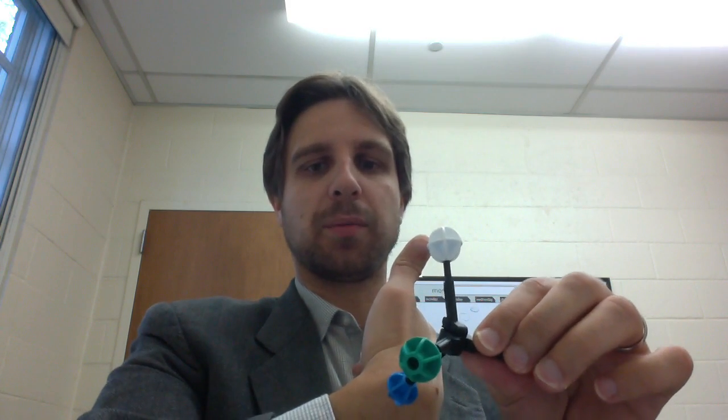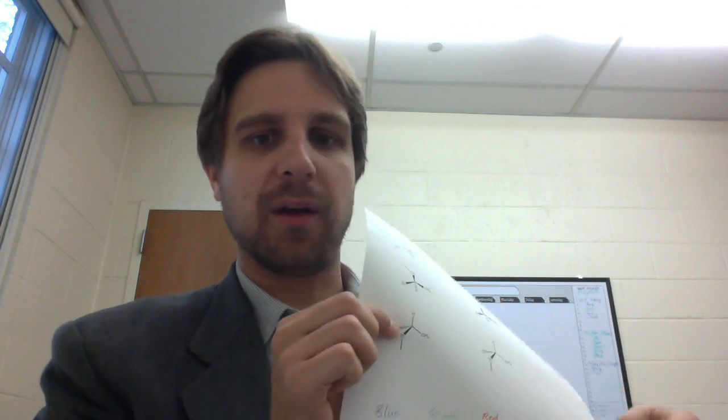So what we can do is we can line our thumb up along the lowest priority group and go from one to two to three. So this molecule here would be the R enantiomer.